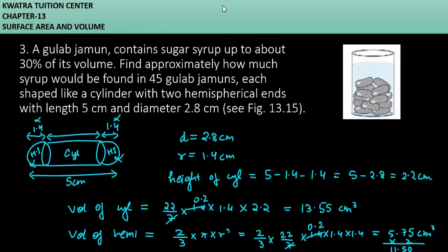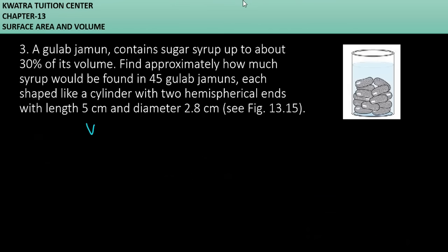तो total volume आजाएगा, volume of 1 gulab jamun. 13.55 and 11.50. तो इसको add कर देते हैं so that we can get the volume of 1 gulab jamun. It will be 13.55 plus 11.50 and the resultant will be 25.05 cm³.